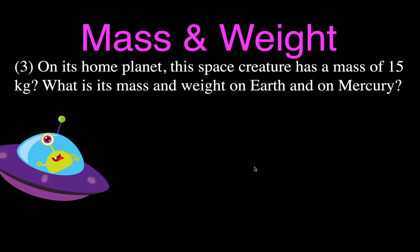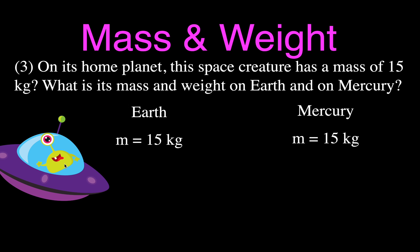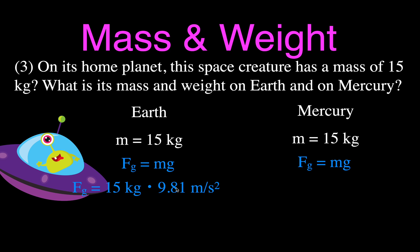Now one more example. This space creature has a mass of 15 kilograms on his home planet, and we want to know his mass and weight on Earth and on Mercury. His mass does not depend on location — whether he's on his home planet, Earth, or Mercury, he's always made of the same stuff. So his mass is always 15 kilograms. To find his weight on Earth, we multiply 15 times 9.81, which gives us 147 Newtons.